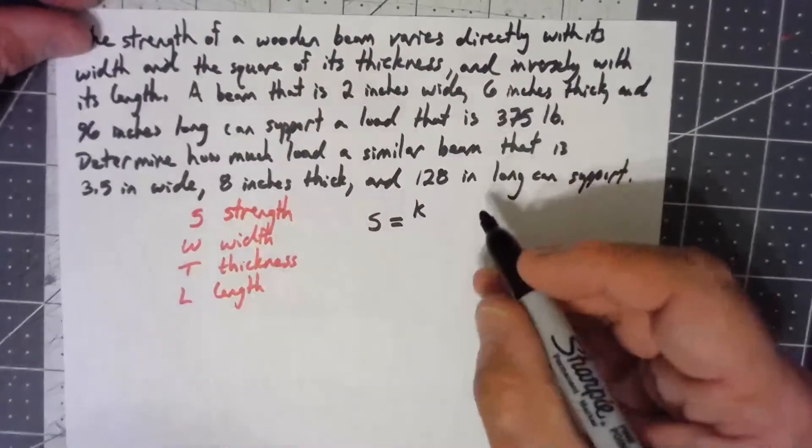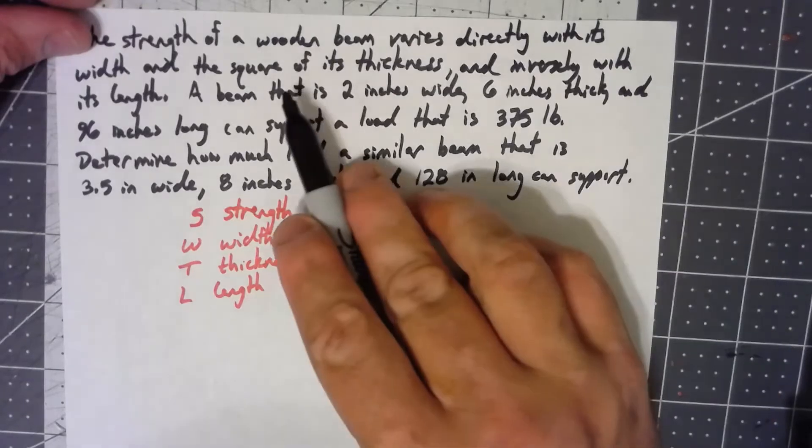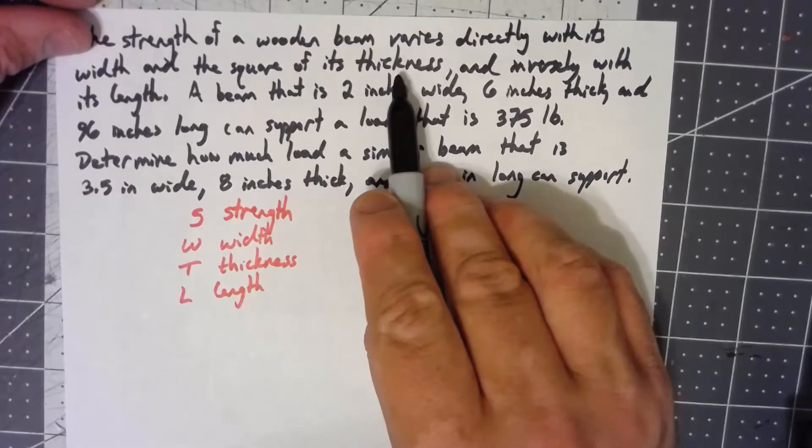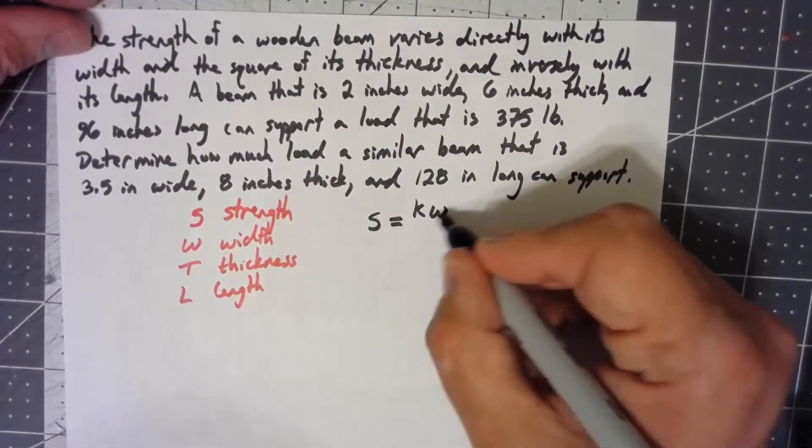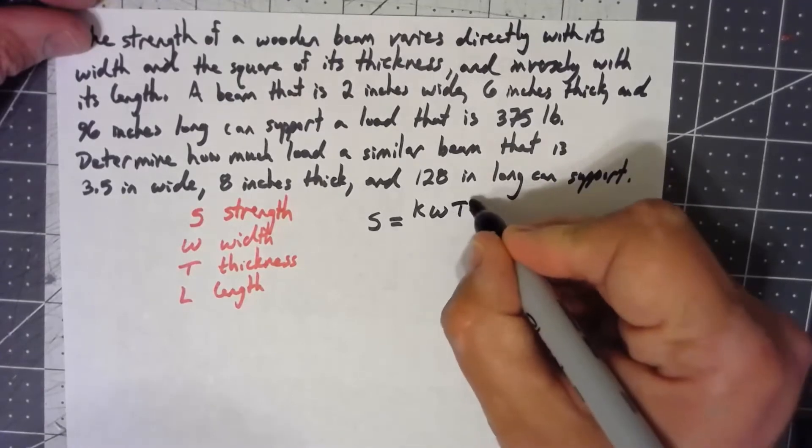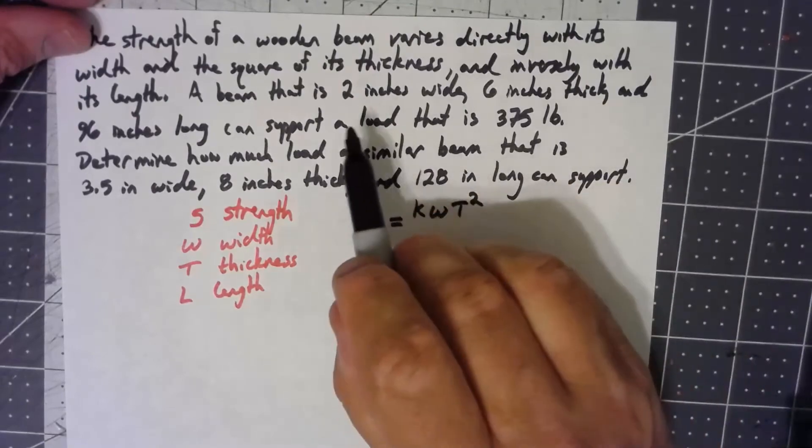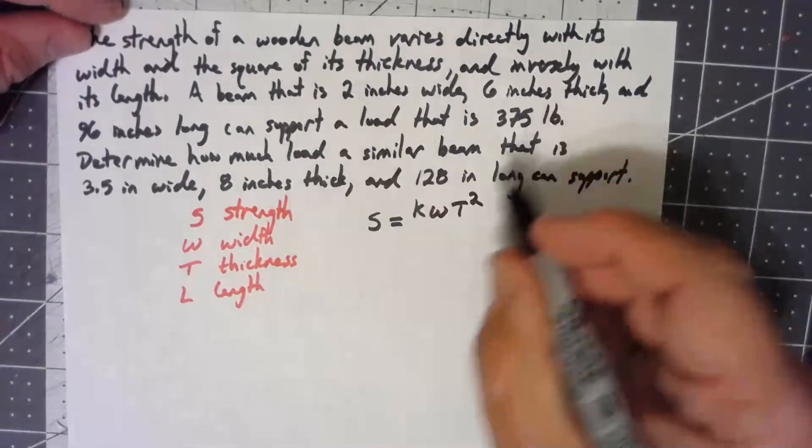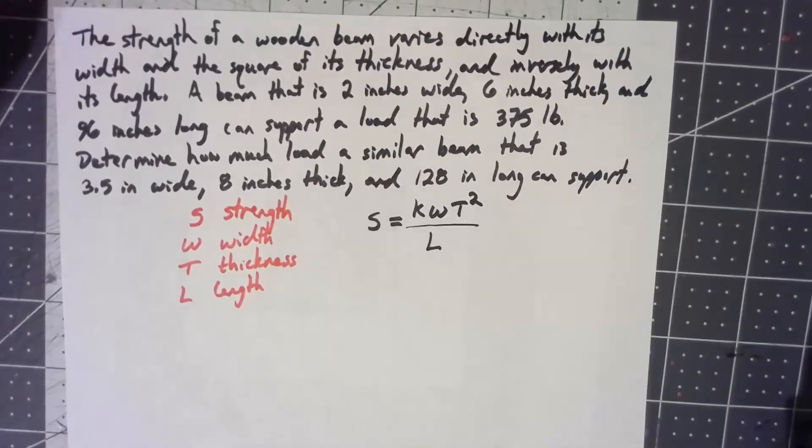Okay, directly is multiplied. So I've got K times W. But it's not just the width. It's also the square of the thickness. Okay, but directly is multiplied. So I'm just going to keep multiplying for the thickness. And it's the thickness squared, it says. But then it says it's inversely with its length. Inversely is divided. So I'm going to divide by L.